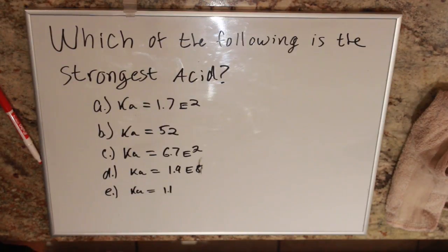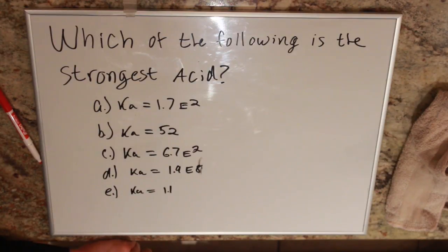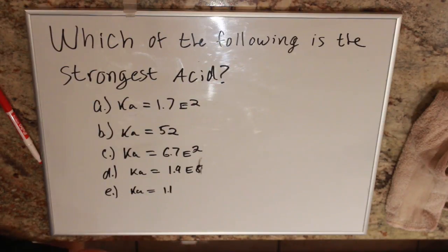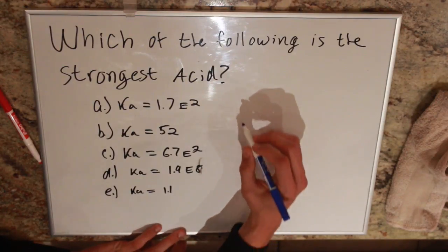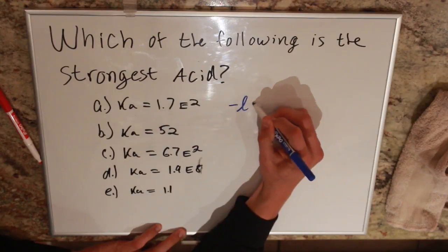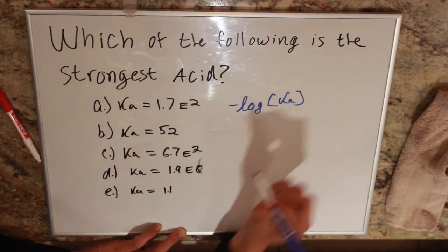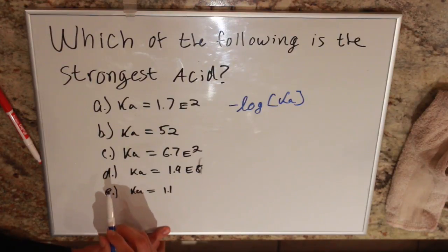The easiest way to do this is to convert them all to pKa values. When you do that, the smallest pKa number is going to be your strongest acid. To find pKa, all you have to do is take the negative log of your Ka. Once you do that, you'll find that the answer is in fact D.